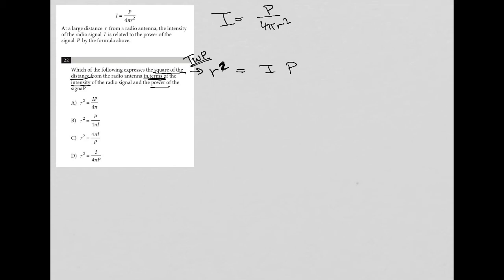So in essence, I'm taking this original equation, and I'm solving, solve for r squared. So let's do that. So I have I equals P over 4 pi r squared. I want r squared on the left side. So I'm going to multiply both sides by r squared so that the r squared cancels out on the right hand side.